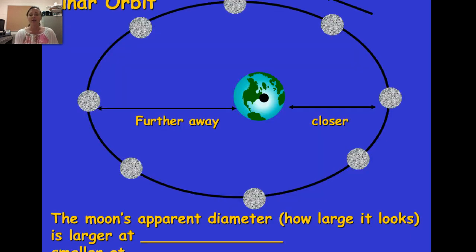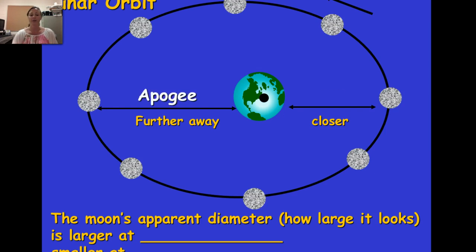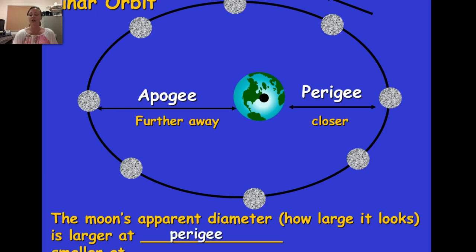We can also discuss this in terms of the moon, which revolves around Earth and has similar terminology. When the moon is closest to us, it is known as perigee. When it's farthest away, it's known as apogee. The moon appears larger at perigee when it's closer, and appears smaller at apogee when it's farther away.